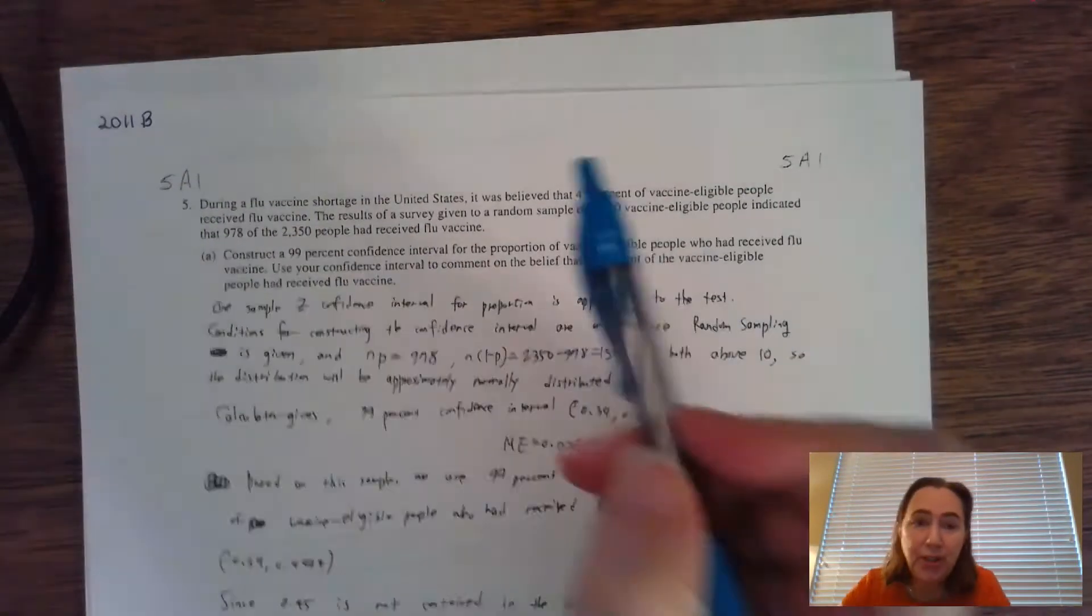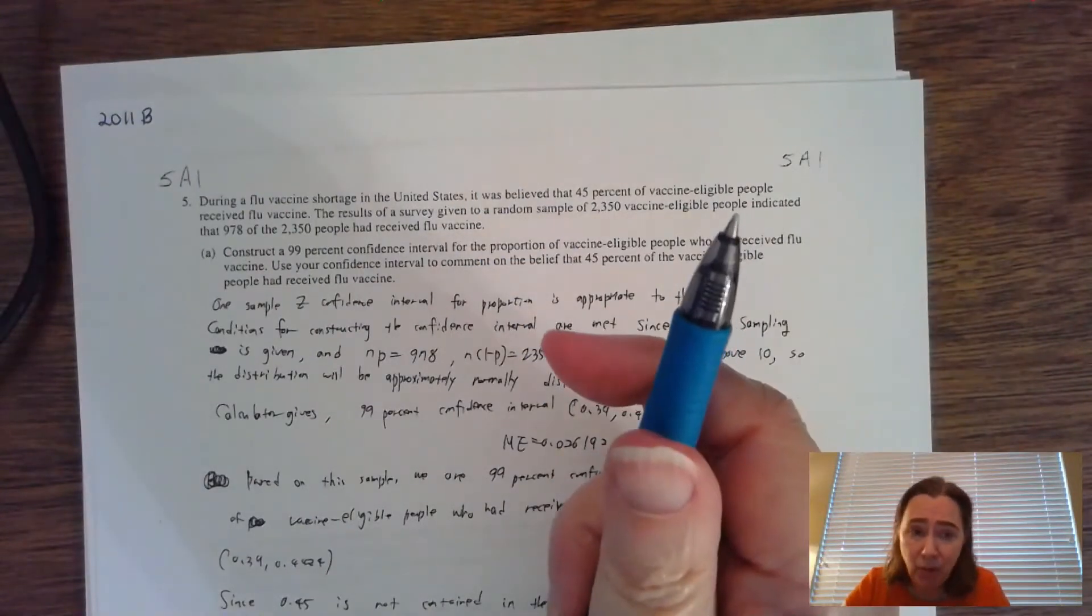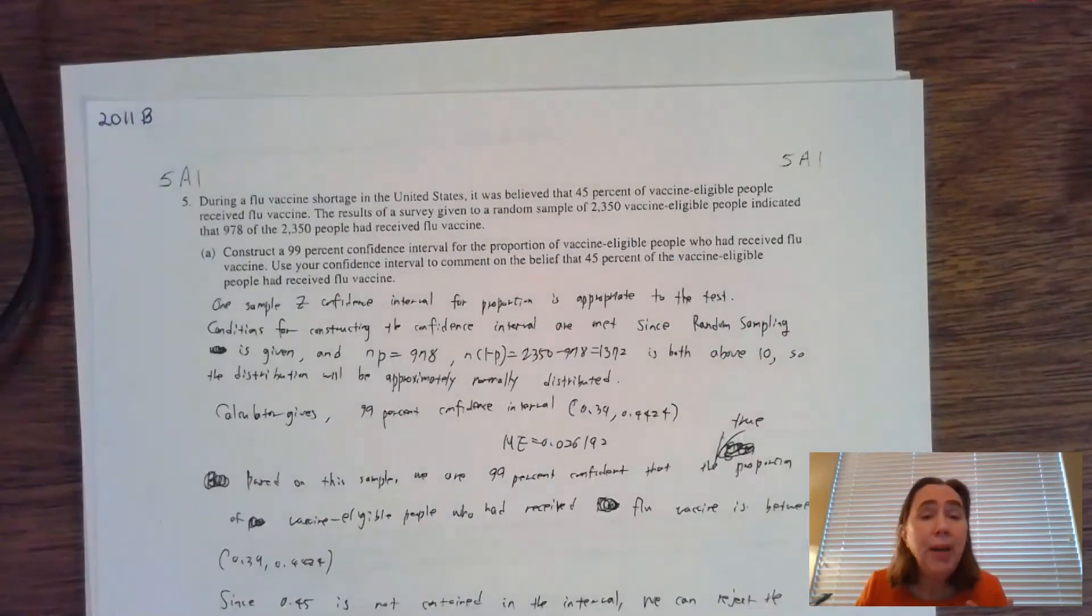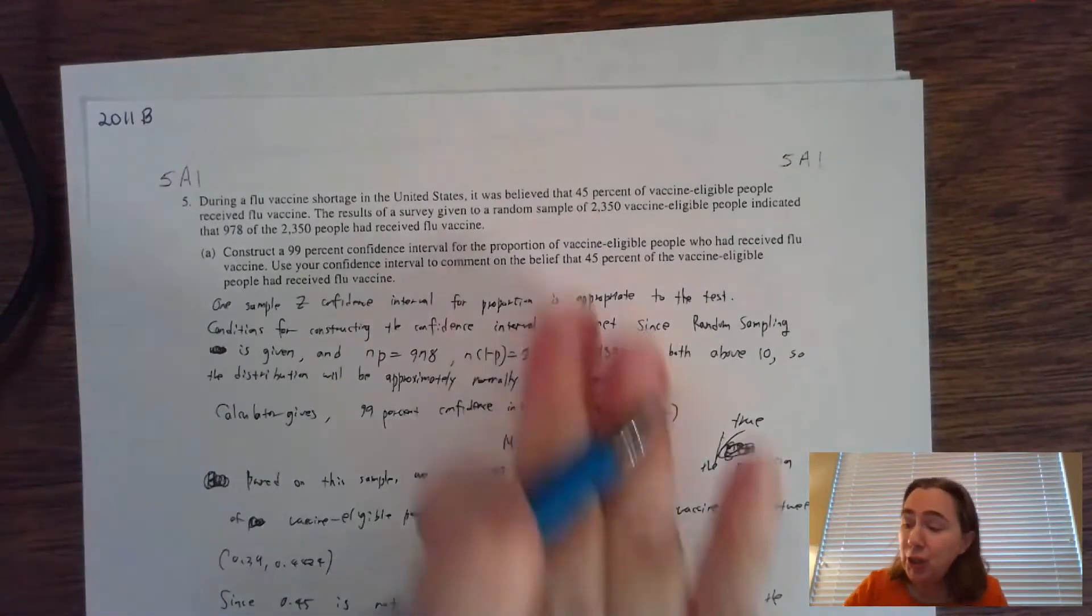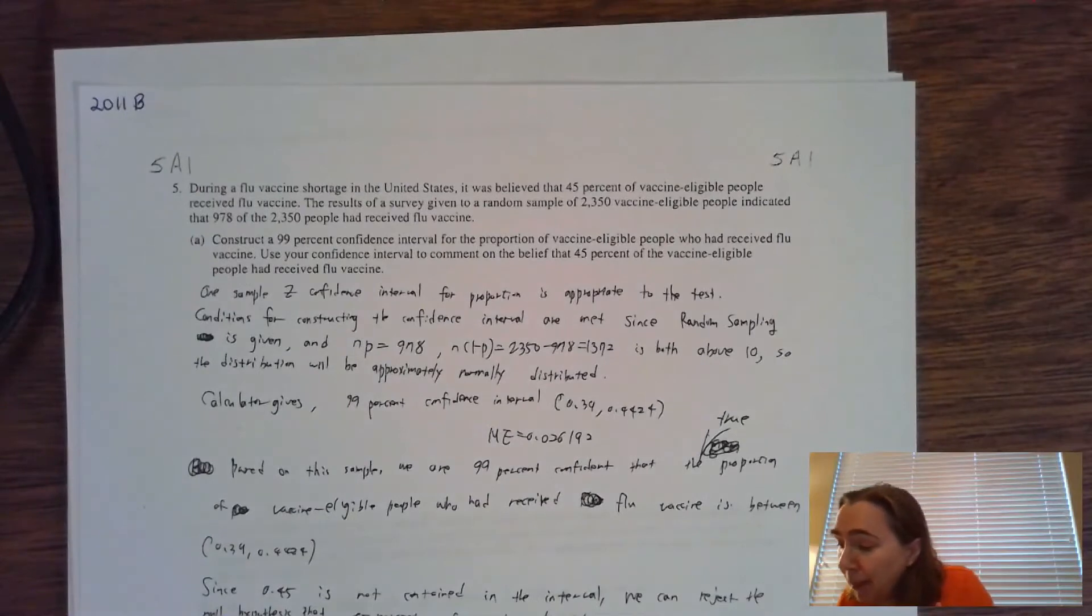2011B, another good question. It involves a confidence interval. Part A says construct a 99% confidence interval for the proportion—that's a really big hint. It's going to be a one-prop z-interval that we're calculating. We need to jump in and check the conditions because there's nothing there that says assume all the conditions are met.